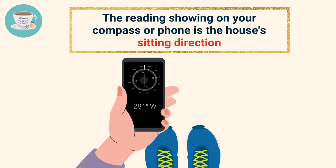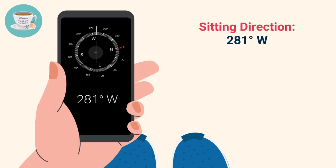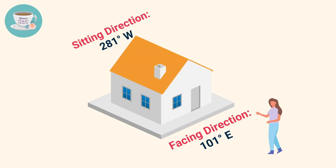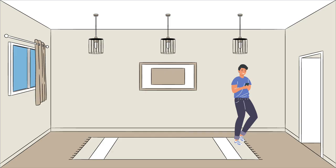In this example, the sitting direction of the house is 281 degrees West. Once we know the accurate sitting direction, we would be able to know the facing direction, which is 101 degrees East. This is how we measure the house's sitting and facing directions using the phone.